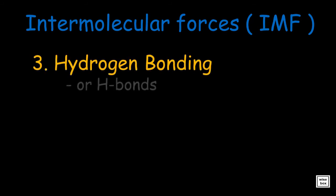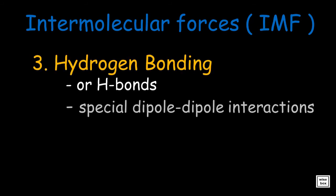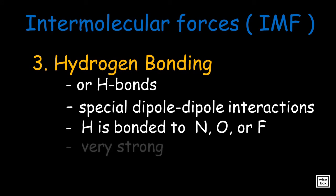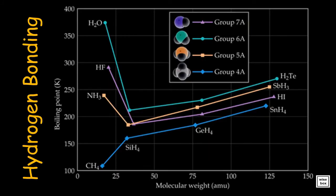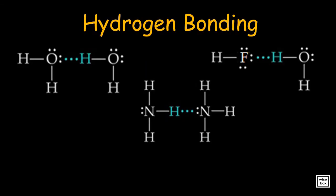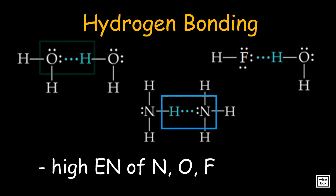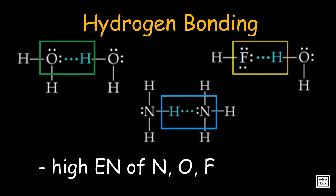Hydrogen bonding, or H-bonds, are special dipole-dipole interactions experienced when hydrogen is bonded to nitrogen, oxygen, or fluorine. They are unusually very strong. The unexpectedly high boiling points of ammonia, hydrogen fluoride, and water are due to the presence of hydrogen bonds. Hydrogen bonding arises in part from the high electronegativity of nitrogen, oxygen, and fluorine atoms in these molecules.